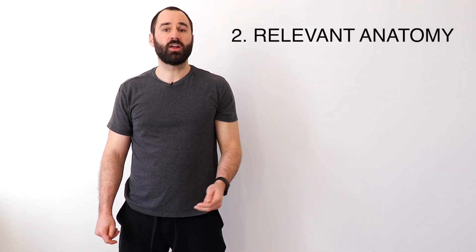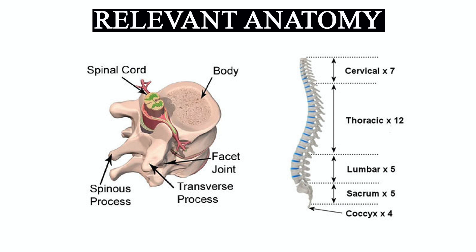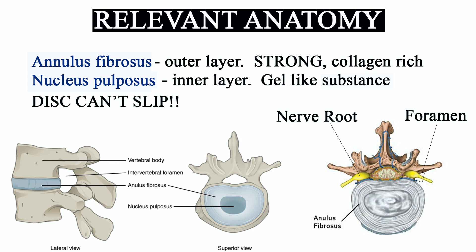Next we're going to discuss the relevant anatomy. Your spine has 22 bones called vertebrae that are broken down into three different sections: the top part is the cervical spine, the middle part is the thoracic spine, and the bottom part is the lumbar spine, which has five different segments. Between each bone is a disc. This disc has two different parts: the outer part is a collagen-like substance called the annulus fibrosis, which is very strong and resilient, and the inside is a nucleus pulposus, which is a thick jelly-like substance. These discs are designed to absorb a large amount of load and allow a little movement at each joint.